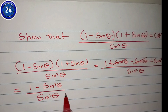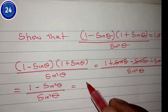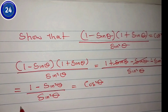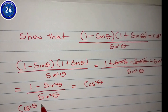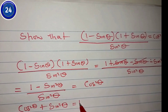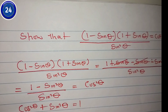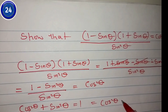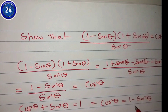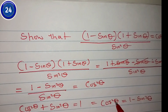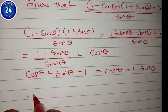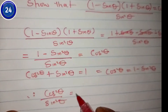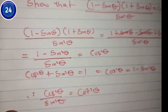Remember, one minus sine squared theta equals cos squared theta, because the Pythagorean identity states cos squared theta plus sine squared theta equals one. If you make cos squared theta the subject, it becomes cos squared theta equals one minus sine squared theta. So one minus sine squared theta over sine squared theta equals cos squared theta over sine squared theta, which equals cot squared theta. Hence the proof.